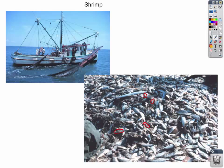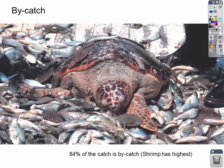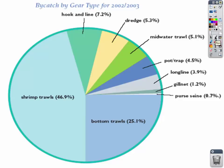Bycatch can be anything inadvertently caught that wasn't targeted. We see some of our endangered species being caught as bycatch. Looking at this pie chart, which puts things into perspective, the biggest chunk is the shrimping industry using those trawling nets.